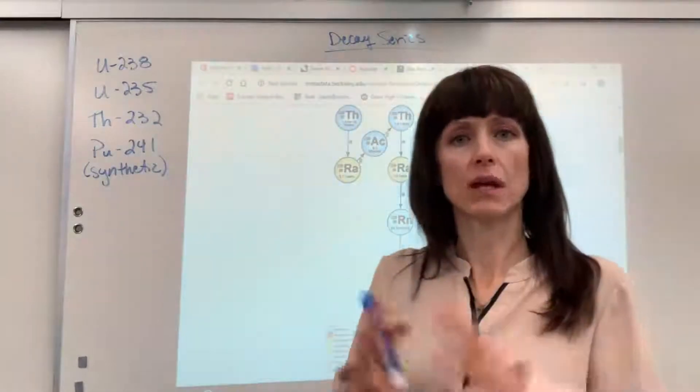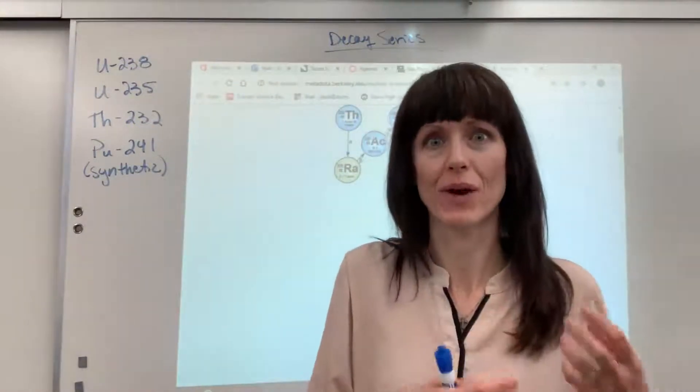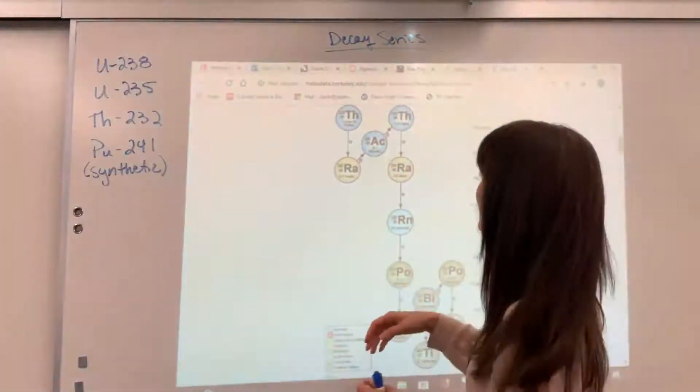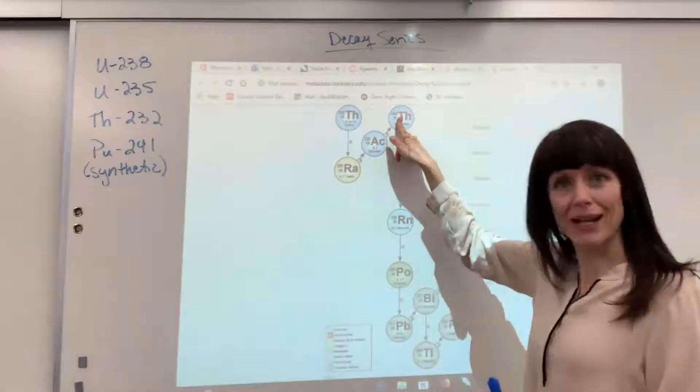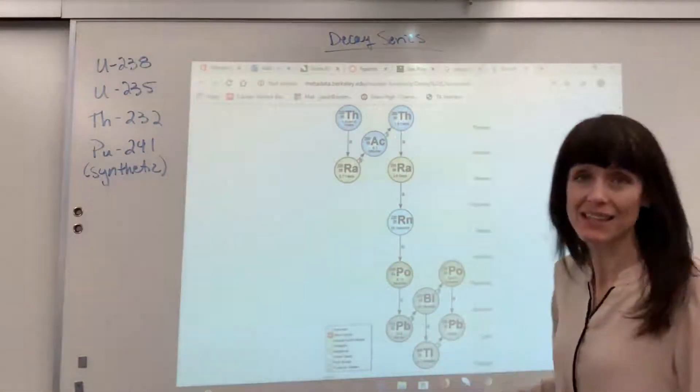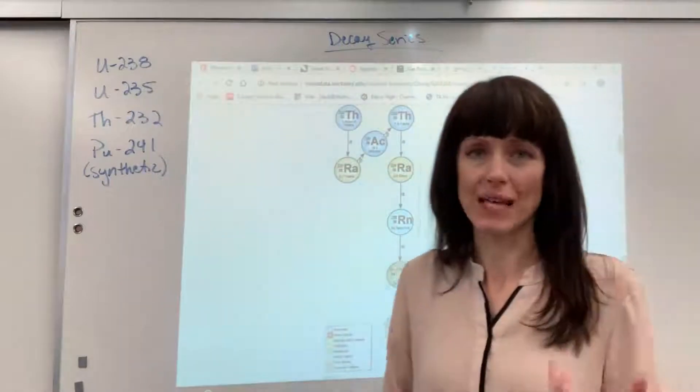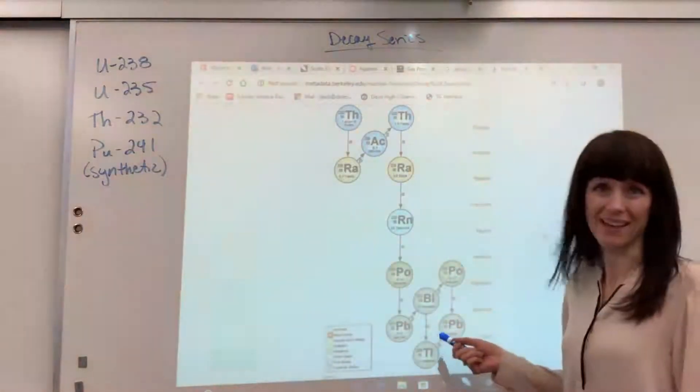A decay series is when you start with a radioactive isotope and it decays to another radioactive isotope, and that decays to another radioactive isotope, which decays to another radioactive isotope, and it decays and decays and decays till finally it ends at a stable non-radioactive isotope, which is always going to be lead.